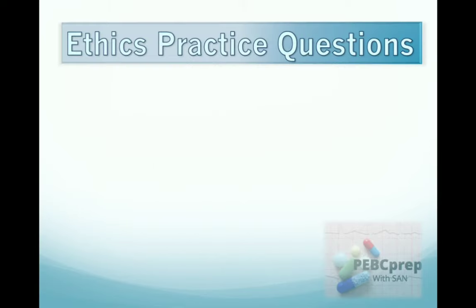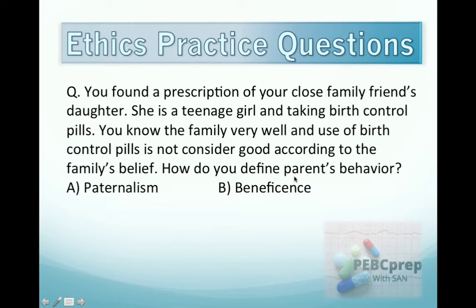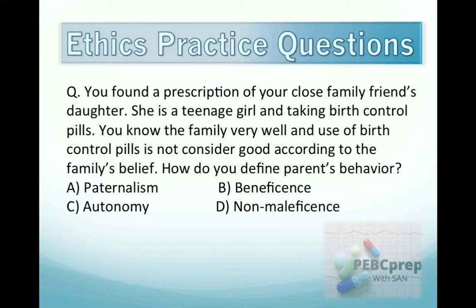A similar question: you found a prescription of your close family friend's daughter — a teenage girl taking birth control pills. The family believes use of birth control pills is not good. How do you define the parent's behavior? The question is about the parent's behavior. Options: A: paternalism, B: beneficence, C: autonomy, D: non-maleficence. The answer is A, paternalism, because they are imposing their belief on the teenage girl.